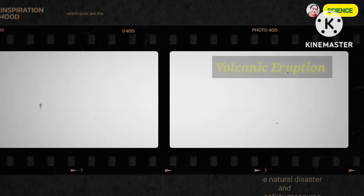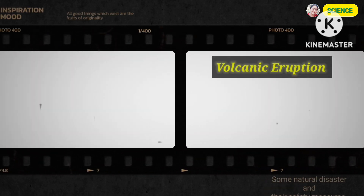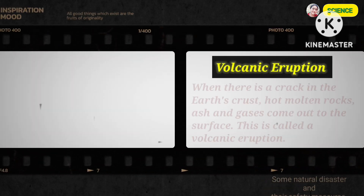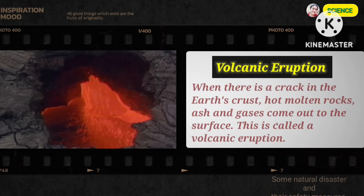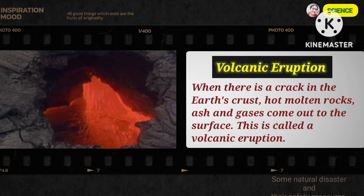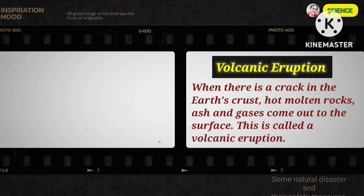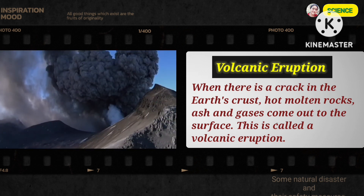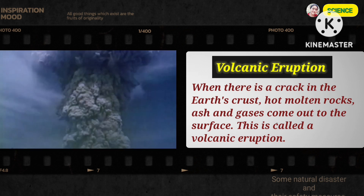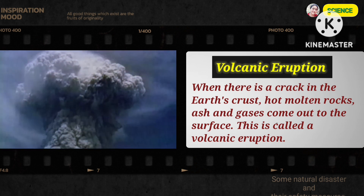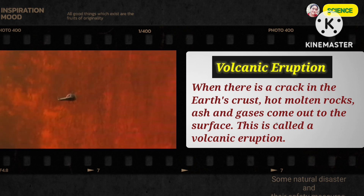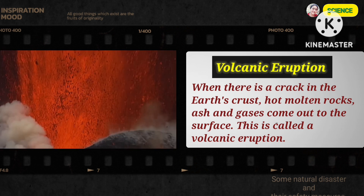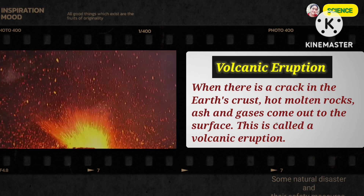Volcanic eruption. When there is a crack in the earth's crust, hot molten rocks, ash and gases come out to the surface. This is called a volcanic eruption.